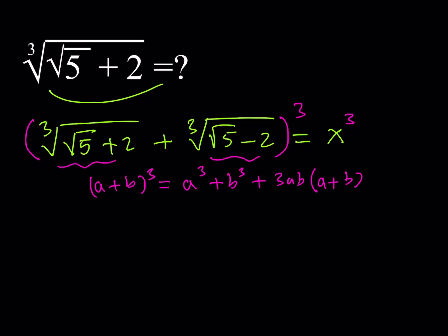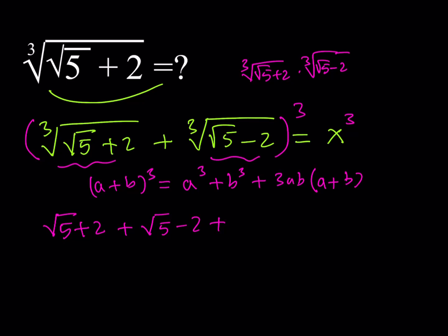When we cube the first term, we get rid of the cube root. So b³ gives √5 − 2. Now for 3ab: when you multiply the cube root of (√5 + 2) and the cube root of (√5 − 2), by difference of two squares you multiply the insides and get 5 − 4 = 1. So 3ab = 3 × 1, and a + b is just x.